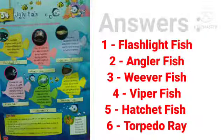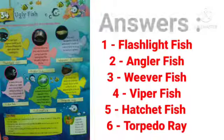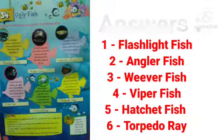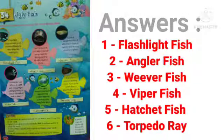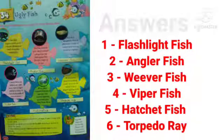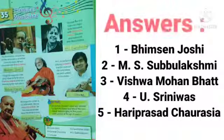Now move to Chapter 34: Ugly Fish. Read the description of some ugly fish and try to identify them. The first one is flashlight fish, the second is anglerfish, the third is blobfish, the fourth is viperfish, the fifth is hatchetfish, and the sixth is torpedo ray.